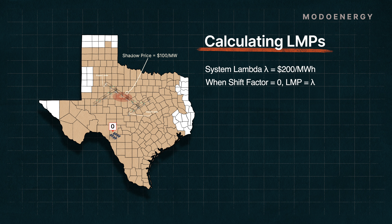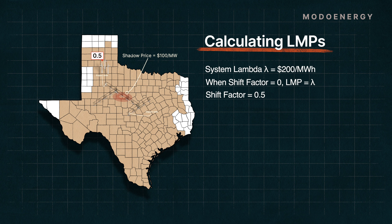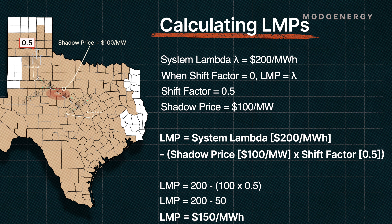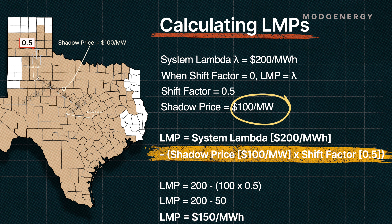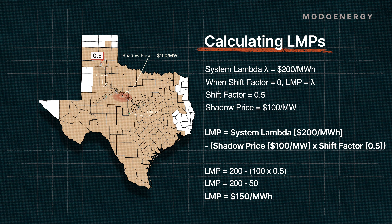Now, let's go back to the generator we introduced before, near the export side of the constraint, and remember that it has a shift factor of 0.5. Its LMP would be calculated by multiplying together the shadow price of the constraint — let's say this is $100 per MW — and the shift factor of the generator, and then subtracting that entire value from the system lambda. Therefore, at this settlement point, the price is lower than the system lambda, with a value of $150 per MWh.